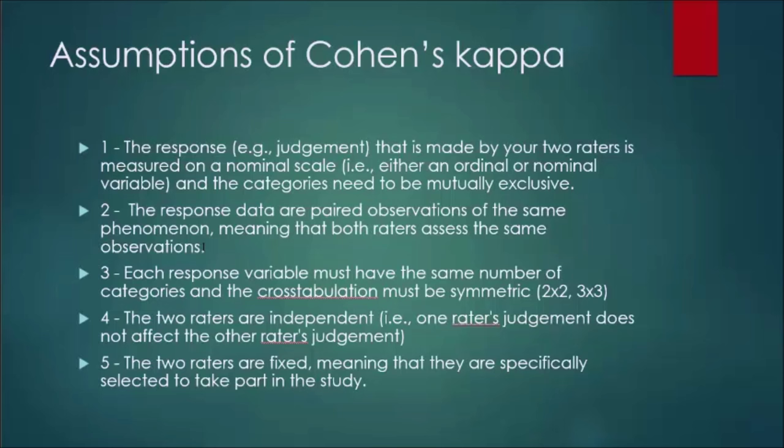Second, the response data are paired with observations of the same phenomenon, meaning that both raters assess the same observations. Third, each response variable must have the same number of categories, and the cross-tabulation must be symmetric — i.e., a 2x2 table or a 3x3 cross-tabulation, but not a 2x3 or a 4x2, and so on. The fourth assumption is that the two raters are independent, i.e., one rater's judgment does not affect the other rater's judgment.